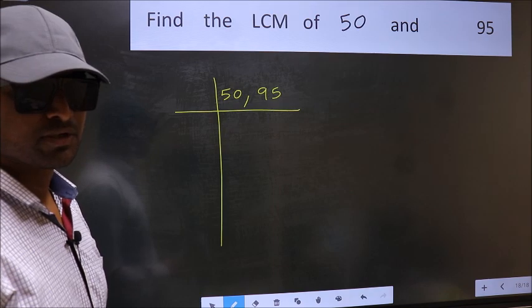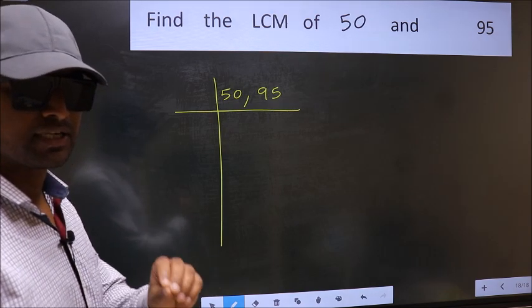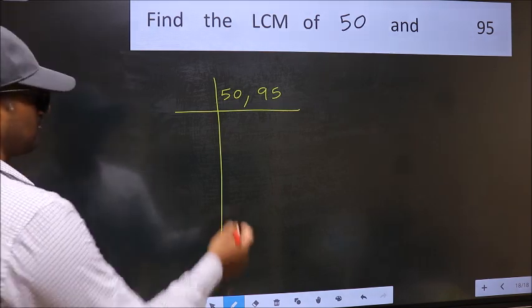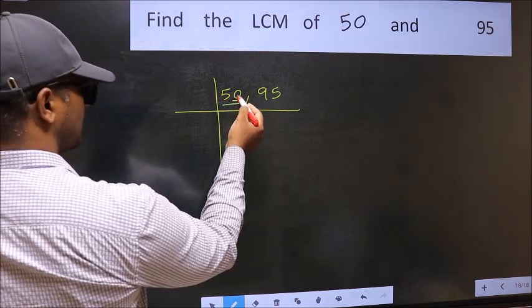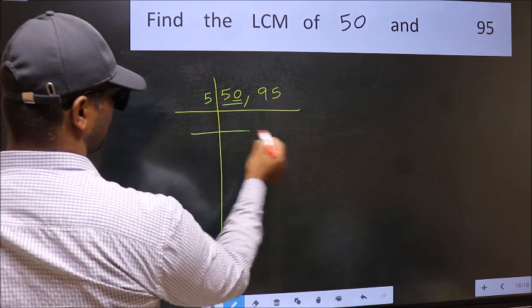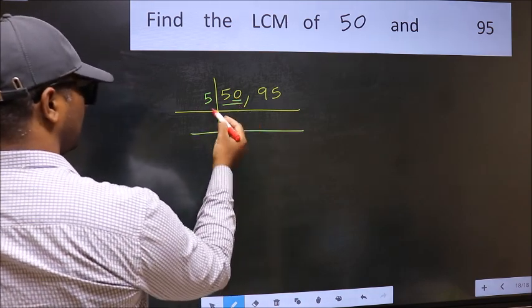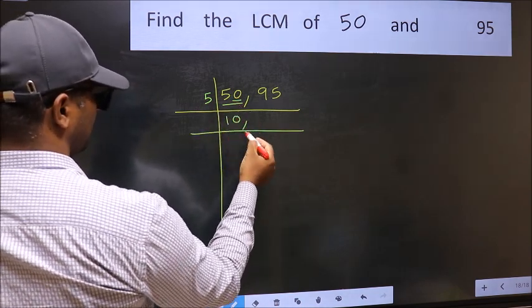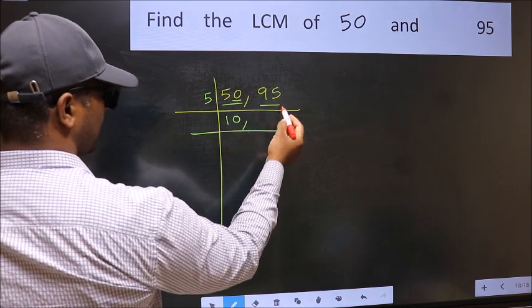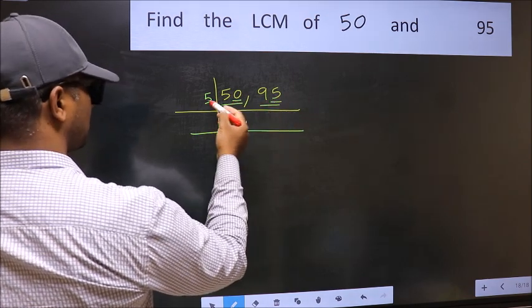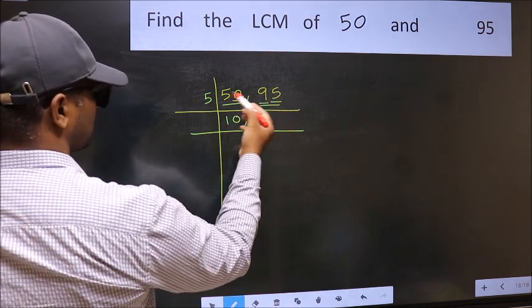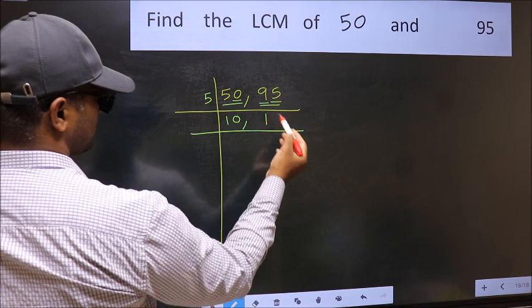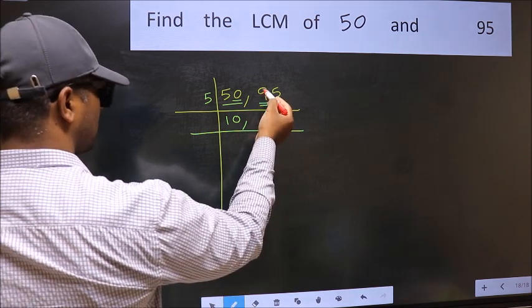Now we should focus on the first number which is 50 here. In this number, last digit is 0 so take 5. When do we get 50 in the 5 table? 5 times 10 is 50. The other number 95, last digit is 5 so this number is divisible by 5. First number is 9. A number close to 9 in the 5 table is 5 once 5.